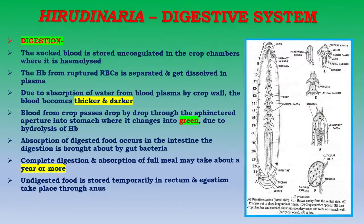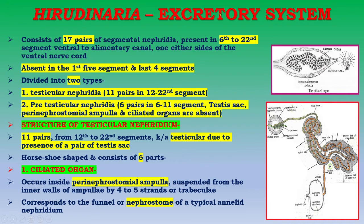The excretory system of Hirudinaria consists of 17 pairs of segmental nephridia, present in segments 6 to 22, ventral to the alimentary canal on either side of the ventral nerve cord. They are absent in the first five segments and the last four segments. Nephridia are divided into two types: testicular nephridia — 11 pairs present in segments 12 to 22 — and pre-testicular nephridia — 6 pairs present in segments 6 to 11. In pre-testicular nephridia, testis sac, peri-nephrostomial ampulla, and seriated organs are absent.